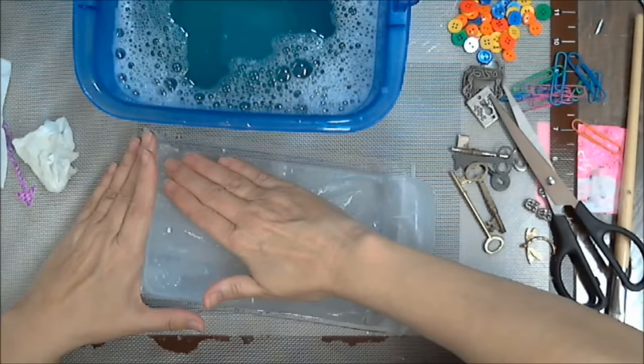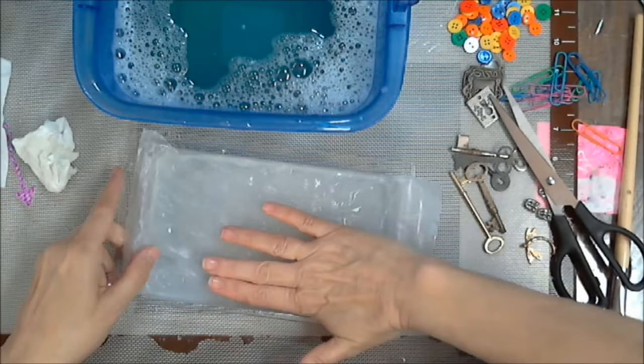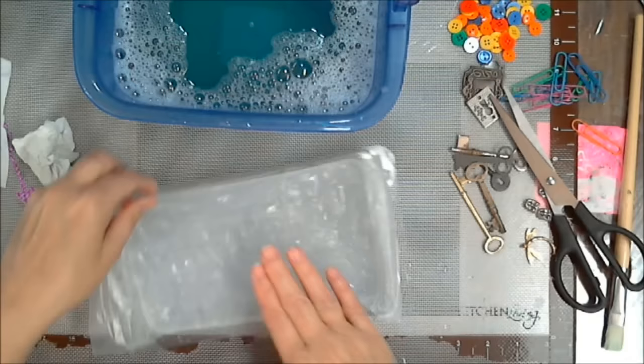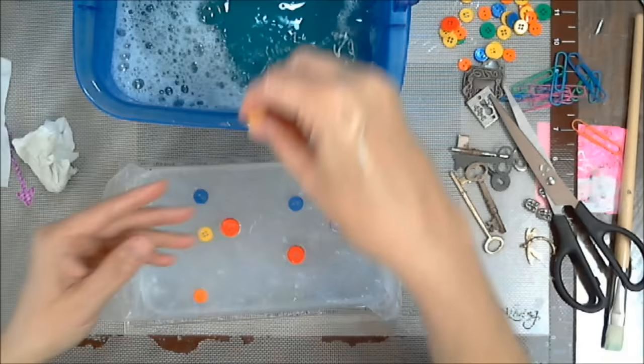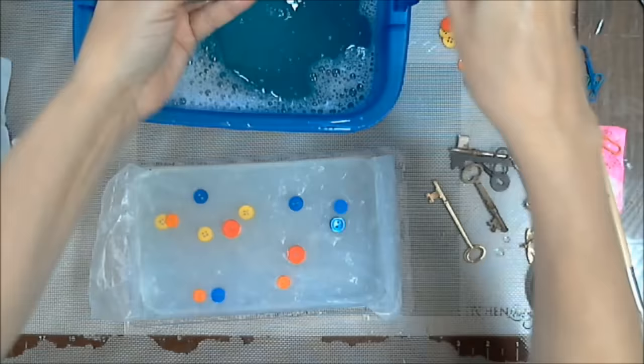I think this mold ended up being half an inch to three quarters of an inch thick. You don't want to go too thin. Otherwise, you'll distort your clay that you're going to use. You can use paper clay, polymer clay, and I'm pretty sure air dry clay. You just want to make sure, once your mold is finished and cured up and all that, that you dust it with corn starch, also known as corn flour, I think is what they call it in Europe.